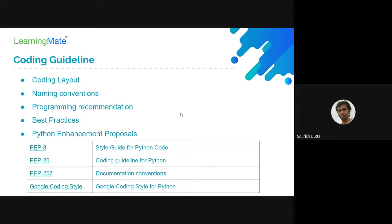Three key Python PEPs are: PEP 8, which talks about a generic style guide for Python code; PEP 20, which talks about best practices; and the documentation convention PEP, which covers how we document our code so others can understand the purpose of a method, class, or module. Google has also published well-renowned coding style guides for different languages.